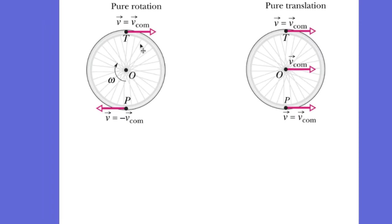In pure rotation, the velocity at the top of the wheel is to the right and at the bottom is to the left — that is a clockwise rotation. The tangential velocity equals the velocity of the center of mass when rolling. For the translational portion, called VCOM, all parts of the wheel are moving at VCOM. When you combine rotation and translation happening at the same time, the velocity at any point on the wheel is the sum of those vectors.